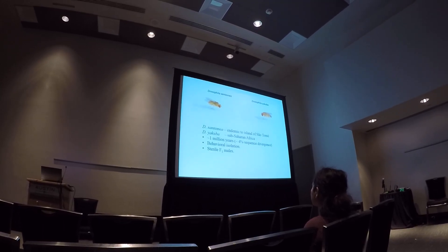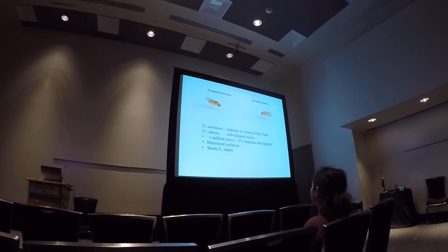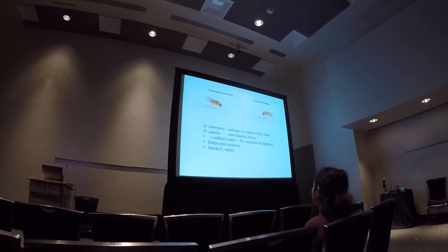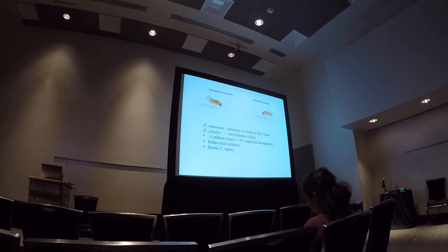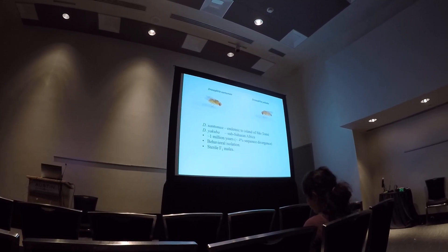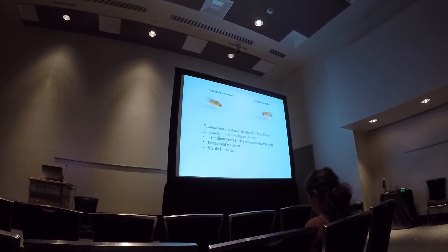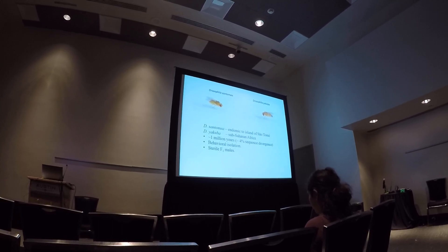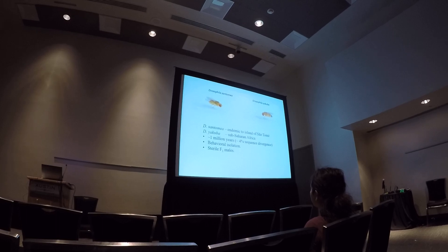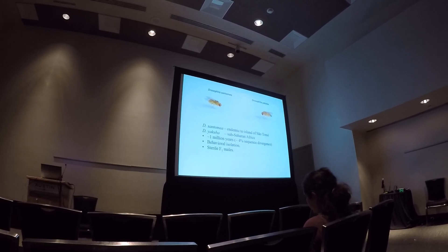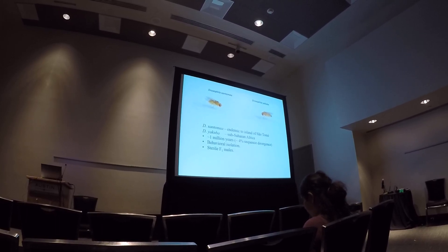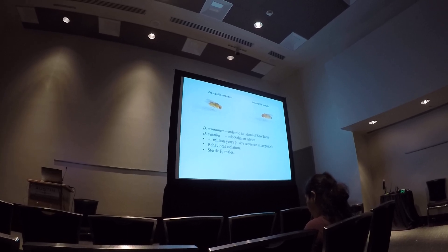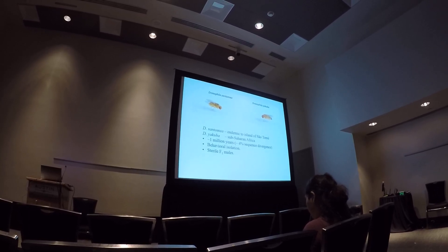And so the species we focused on were Drosophila santomea and Drosophila yakuba. These are sister species. Drosophila santomea is endemic to the island of São Tomé and Drosophila yakuba is more widespread in sub-Saharan Africa. They diverged approximately a million years ago. They have strong behavioral isolation, so females of both species strongly prefer males of their own species over males of the other species. And they produce fully sterile F1 hybrid males in both directions of the cross.